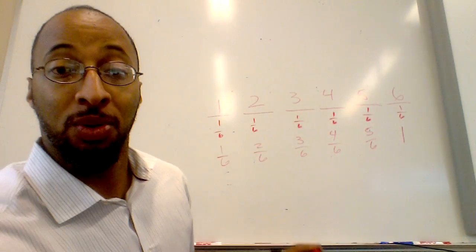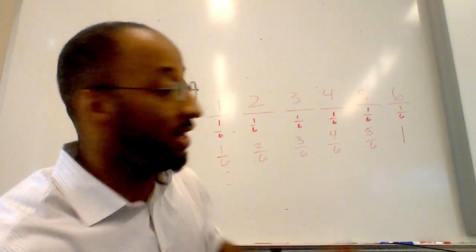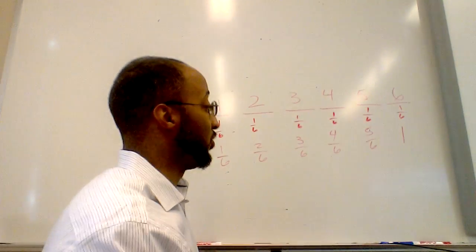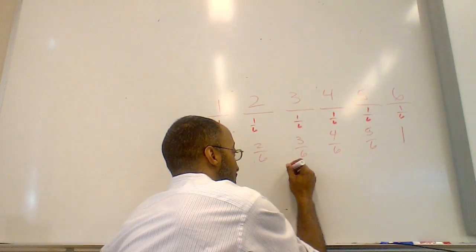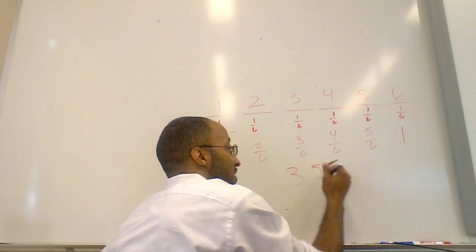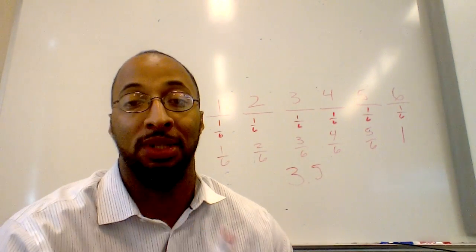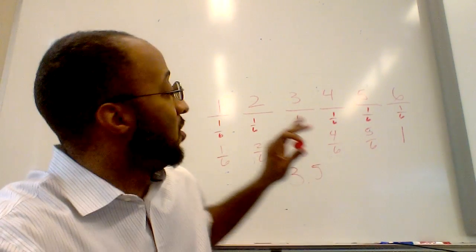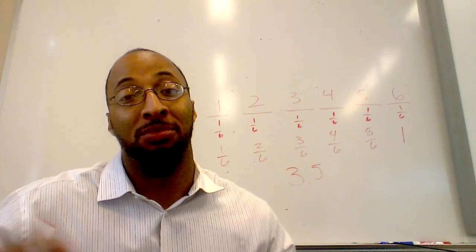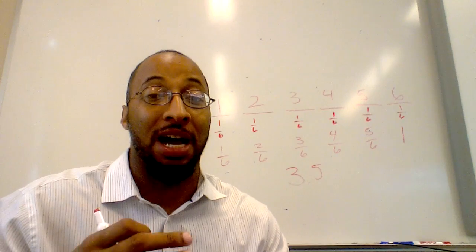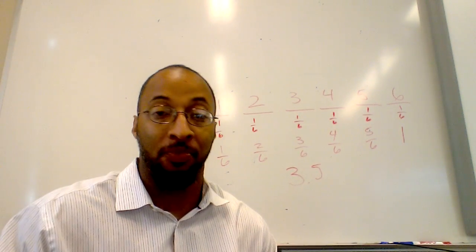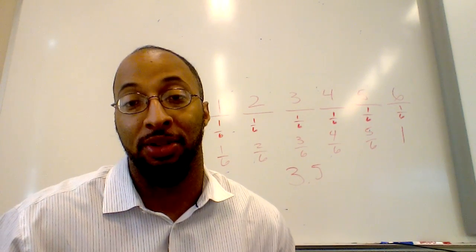Now what we do to find the expected value is we add all these together. So this sum is going to be 3.5 for one die. So what that's saying is if we roll one die an infinitesimal number of times, the average outcome is going to be 3.5. Now that's the easy one to think about.